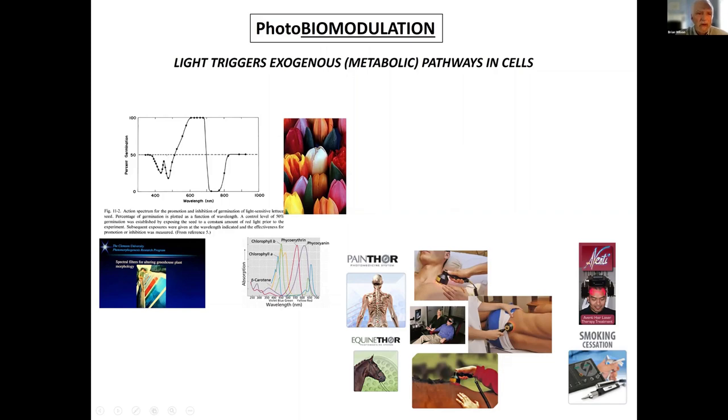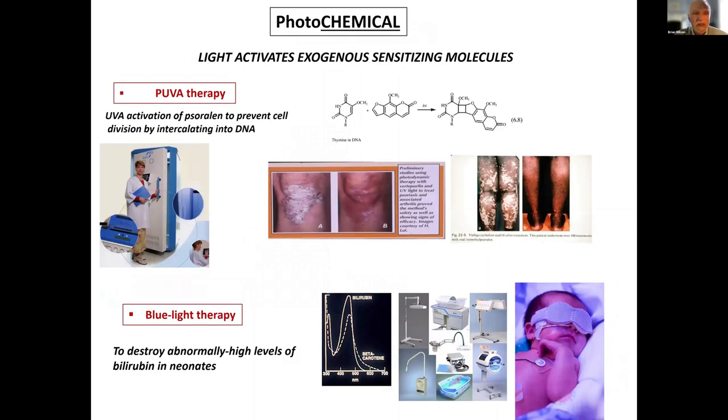Photochemical, where the light is absorbed by a specific chemical that's administered. This example is PUVA, where UVA, ultraviolet A light, is used to activate this molecule called psoralen. Psoralen is interlinked with DNA, and when they absorb UV light, they then prevent the DNA from dividing. So you stop cell replication. This is used for a range of different skin conditions that are caused by hyperproliferation. The cells are dividing too rapidly.